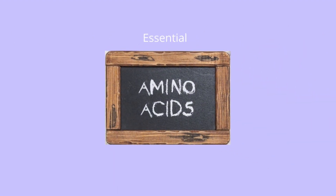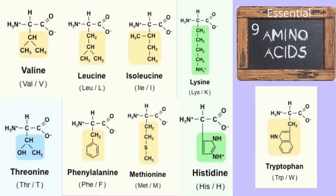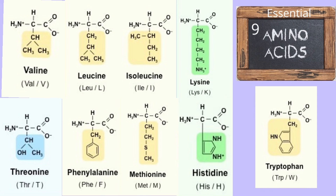Let's first talk about the 9 essential amino acids. They are valine, leucine, isoleucine, lysine, threonine, phenylalanine, methionine, histidine, and tryptophan.